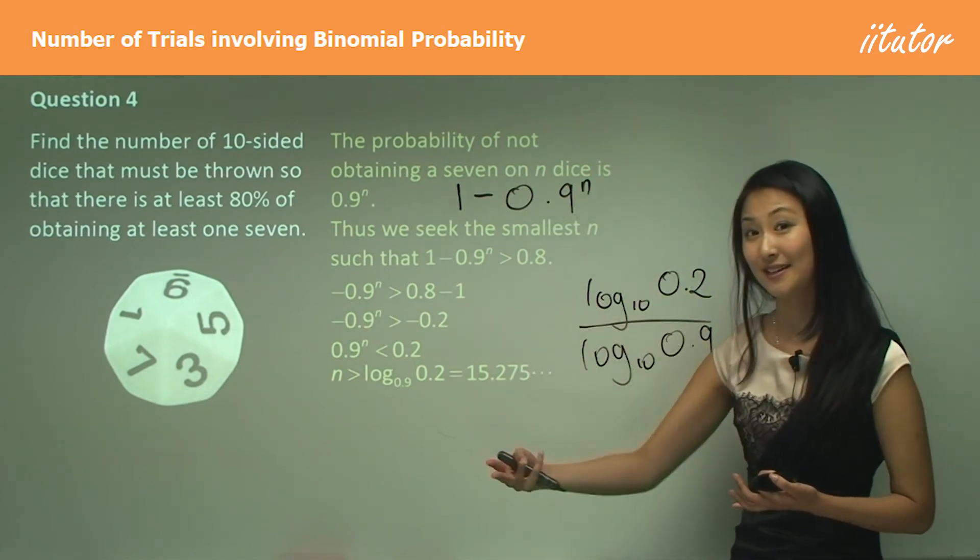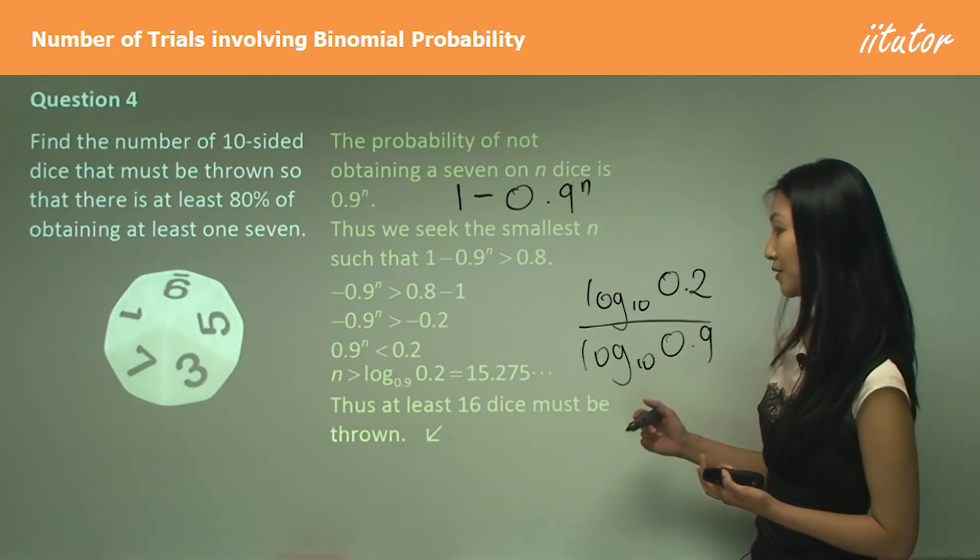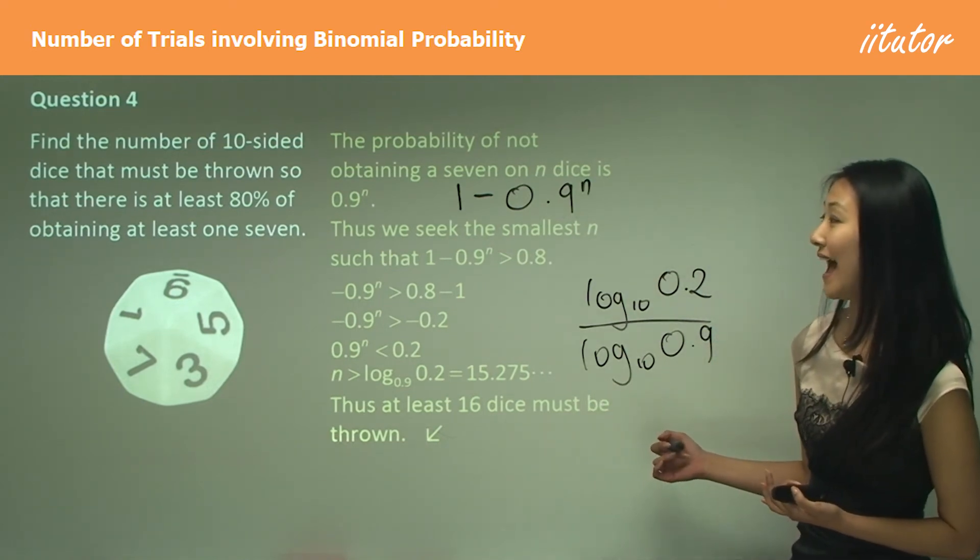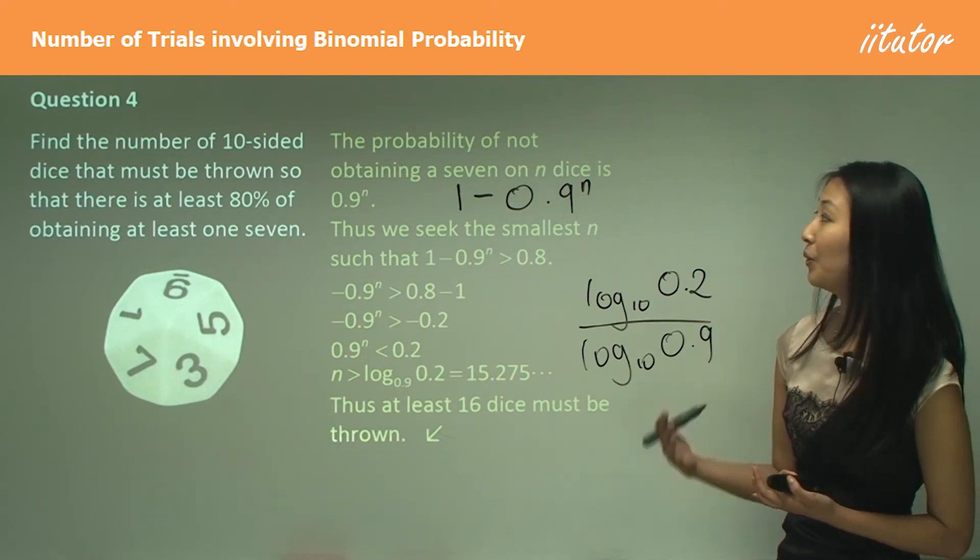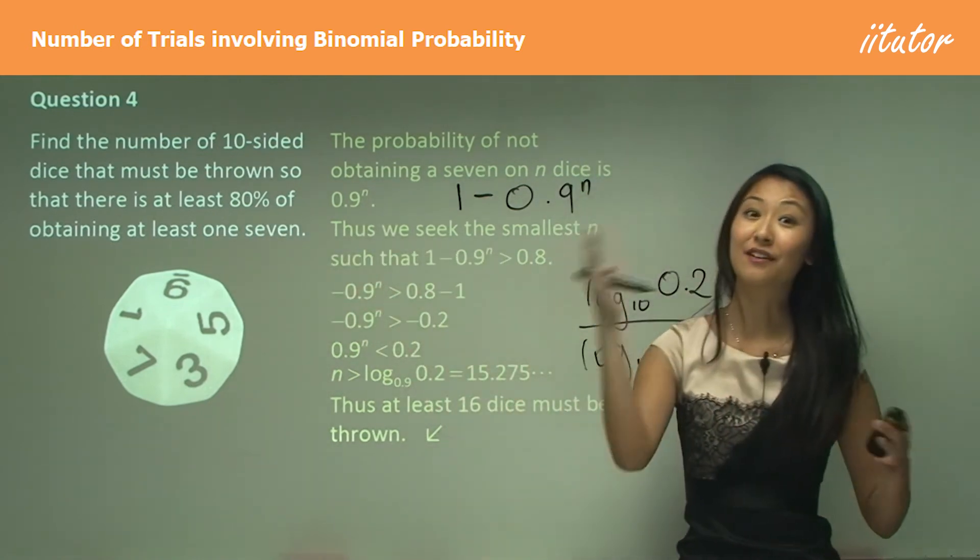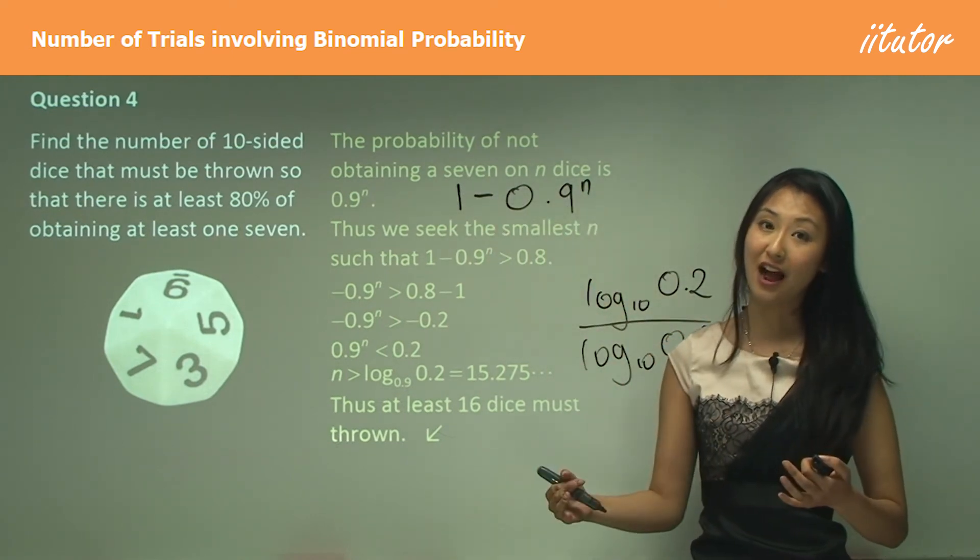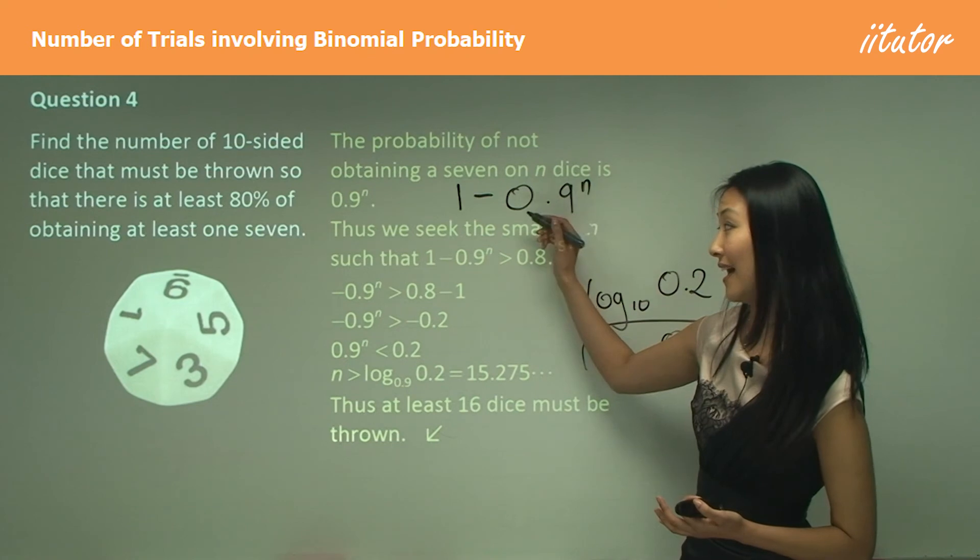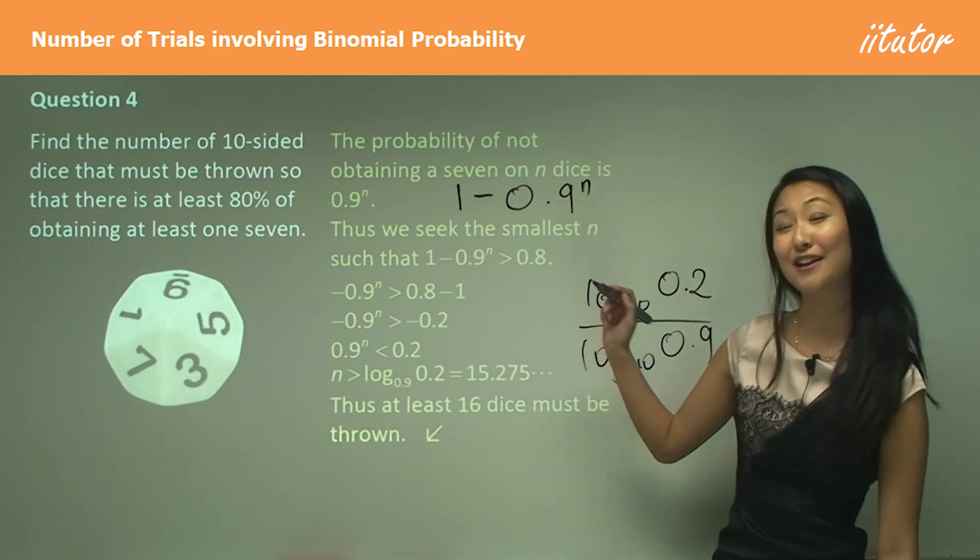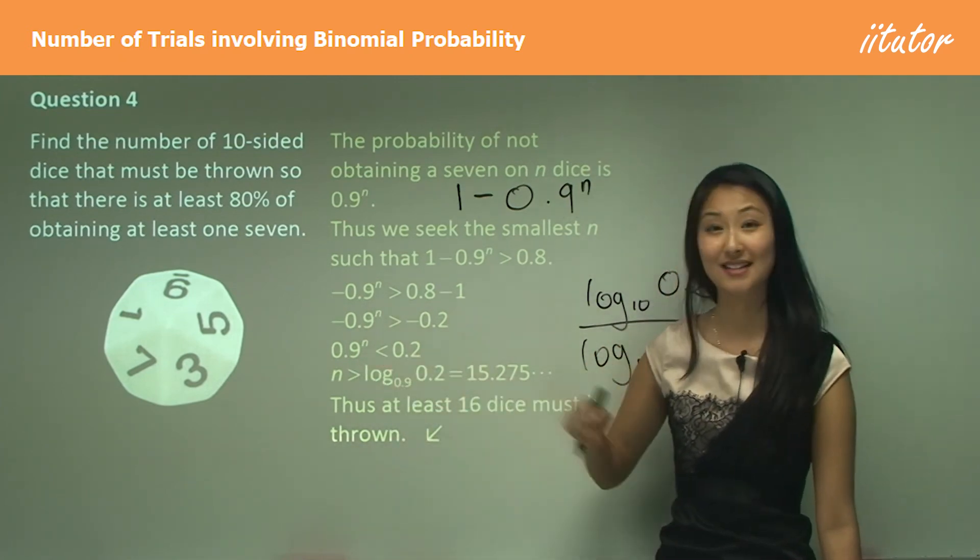You just find the next number along, which is 16. This tells us there has to be at least 16 dice thrown for us to get at least one seven. Just remember when we're finding out how many trials there has to be, what you want to work out is not the probability of how to get it, but the probability of the opposite of that, and then to the power of n. Then one minus that tells you over time the probability of getting that. You want to make that greater than the probability you want to achieve and then work it out. And just remember when you're using the logarithm here, you need to flip the sign because that's less than one.